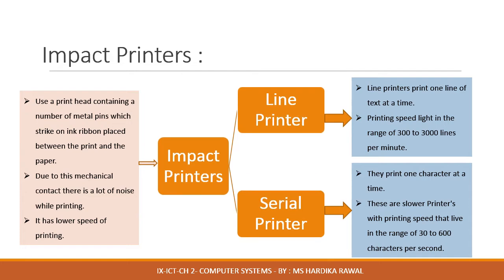Impact printers use a print head containing a number of metal pins which strike on an inked ribbon placed between the print head and the paper. Due to this mechanical contact between the components, there is a lot of noise while printing, and such printers have lower printing speed. Impact printers are divided into two further categories: the line printer and the serial printer.